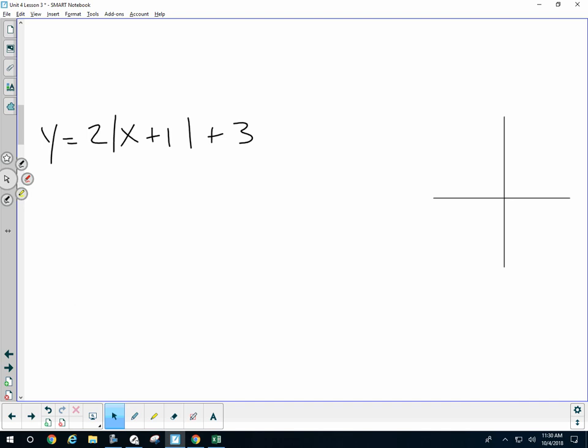Well, the absolute value can only produce a least value of 0. If this is 0, then this entire thing is going to be the smallest that it can be, which is 3. This is how I'm finding my vertex. When the absolute value equals 0.